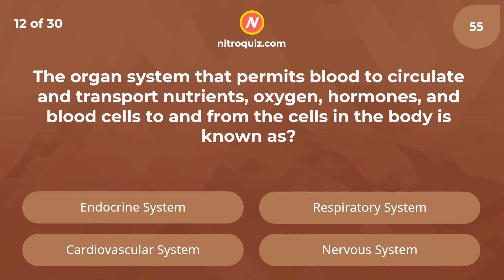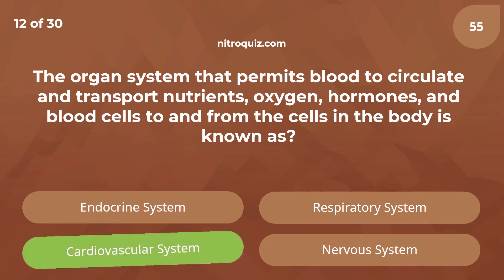The organ system that permits blood to circulate and transport nutrients, cells, oxygen, hormones, and blood cells to and from the cells in the body is known as — answer is the cardiovascular system.